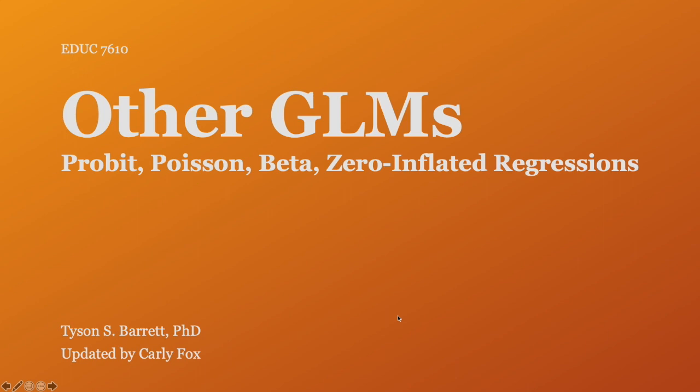Hello, everyone. This is our 15th lecture, getting pretty close to the end. We're talking about other GLMs. We talked about logistic already — it deserves its own lecture because it's such a common GLM used in our fields. But there are others that are similar and can handle different distributions. The ones we're going to go over today are probit, Poisson, beta, and zero-inflated regressions.